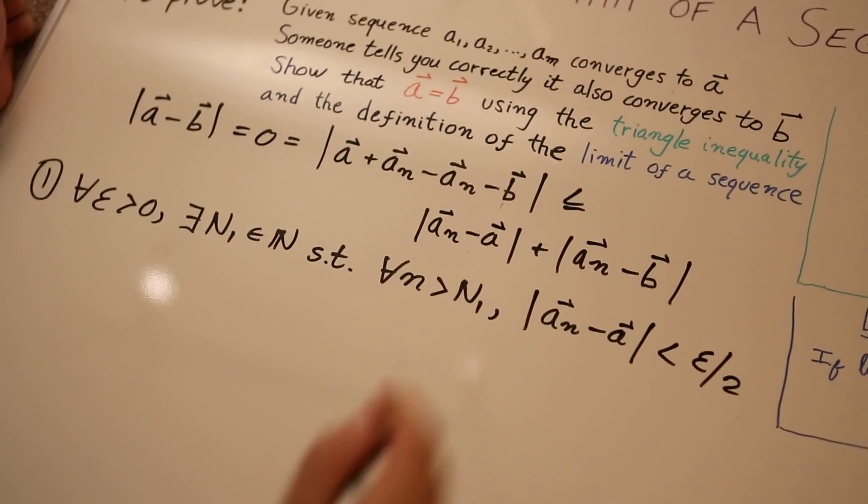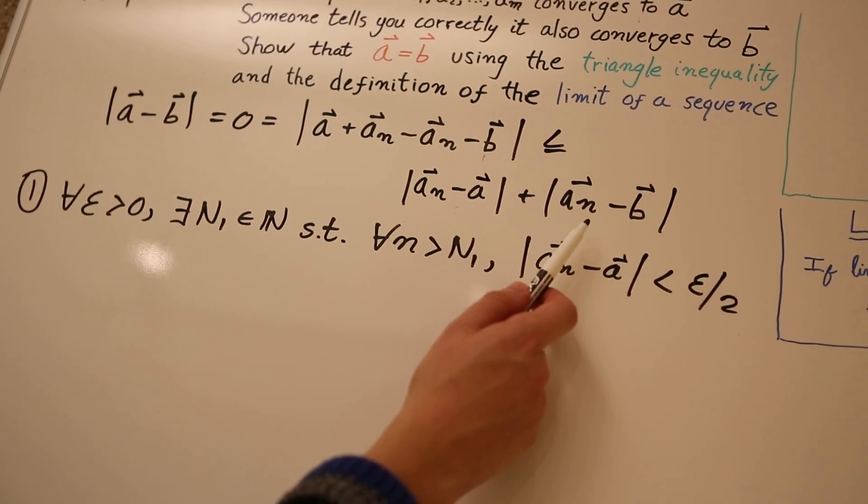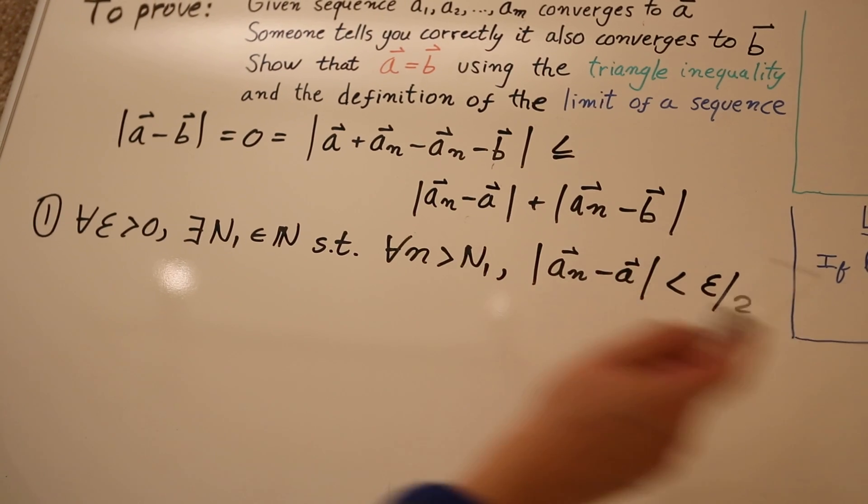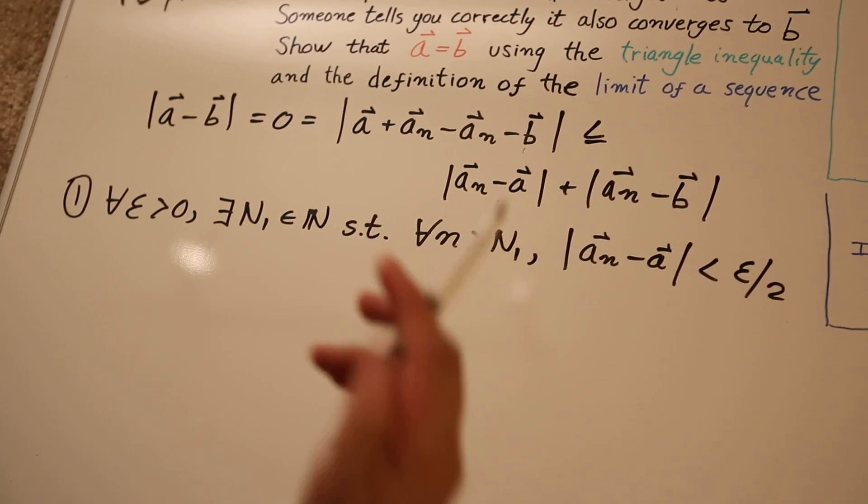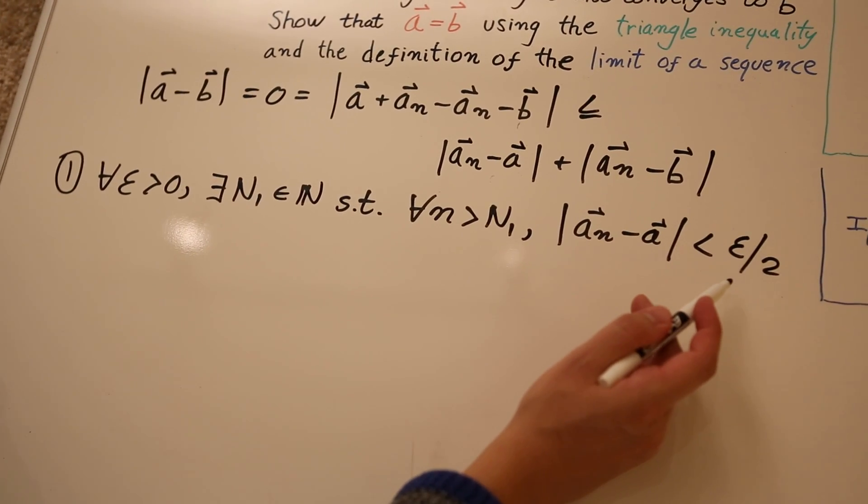AN minus A is less than epsilon. And we're going to say epsilon over two, because later on, we're going to add these two terms, and we want them to be equal to epsilon. So, this is part of our tactic.